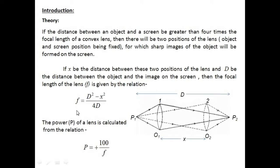So before going to the theory, you should know what is the displacement method. The displacement method is a method in which a convex lens is placed in between the object, that is P1, and the image, that is P2, with the same distance between the object and the image. The lens is moved towards the screen, that is P2, until a clear image is obtained on the screen.